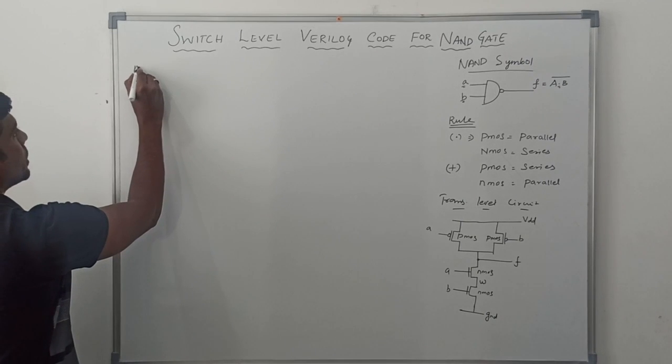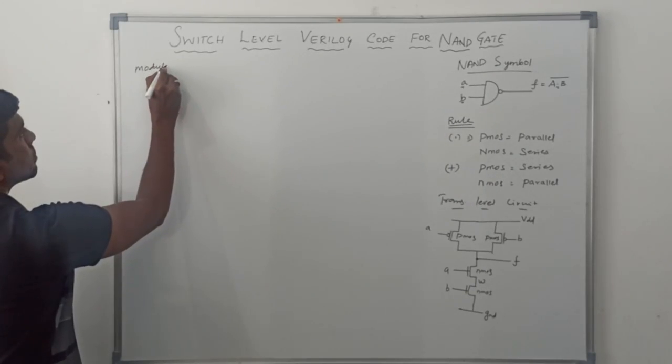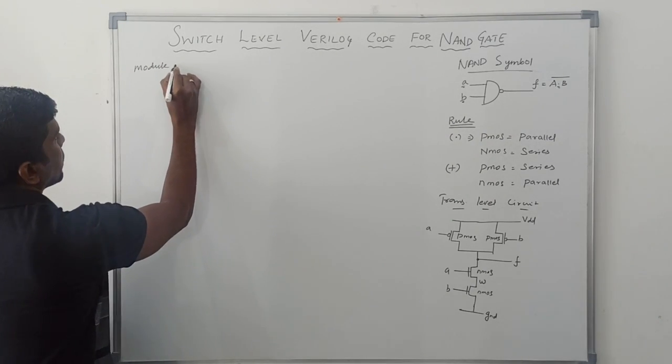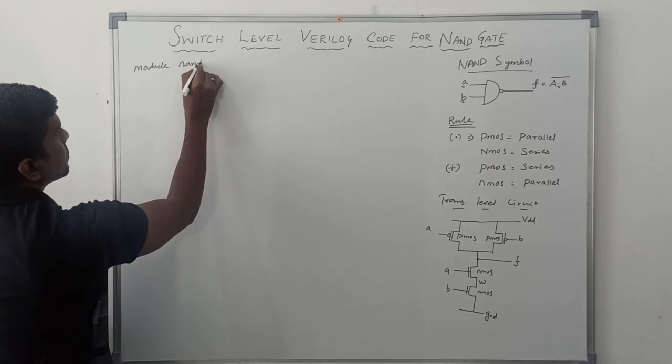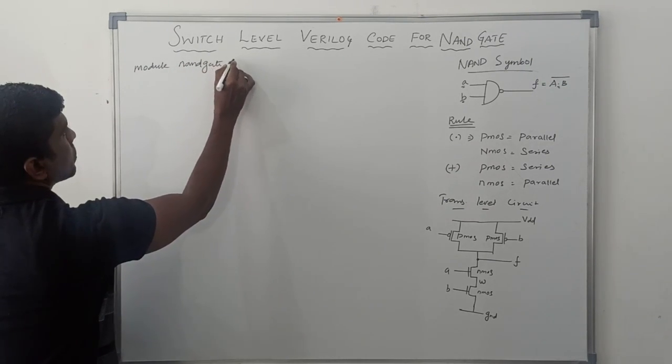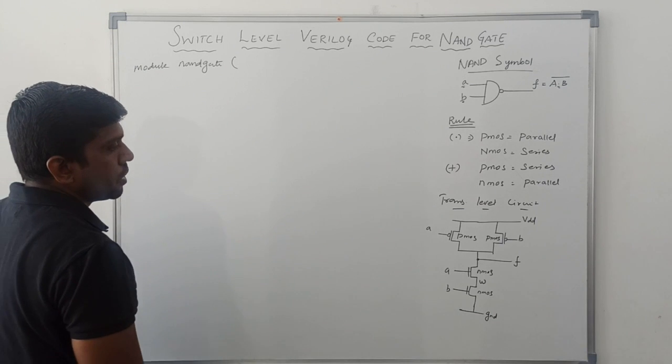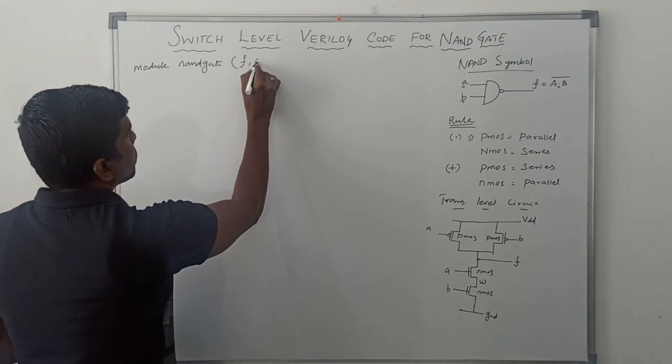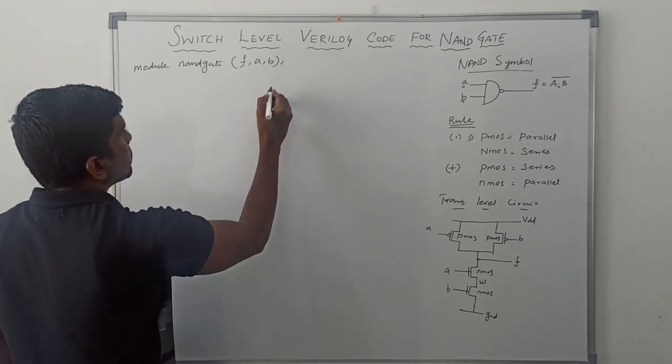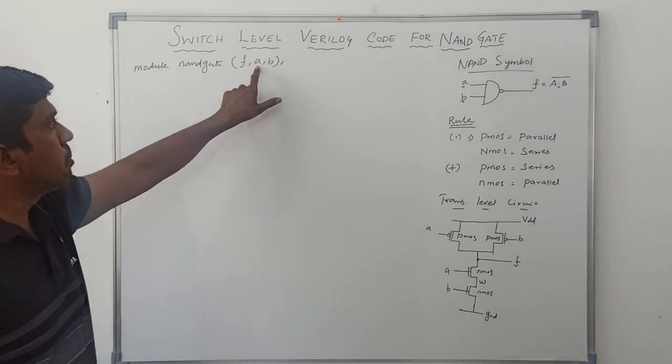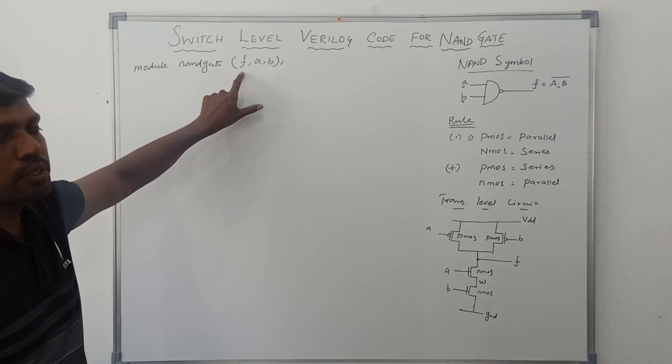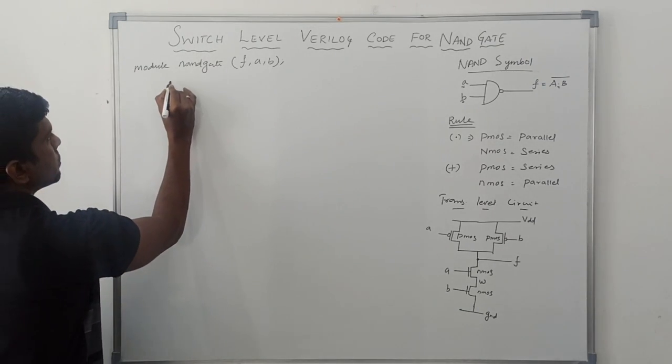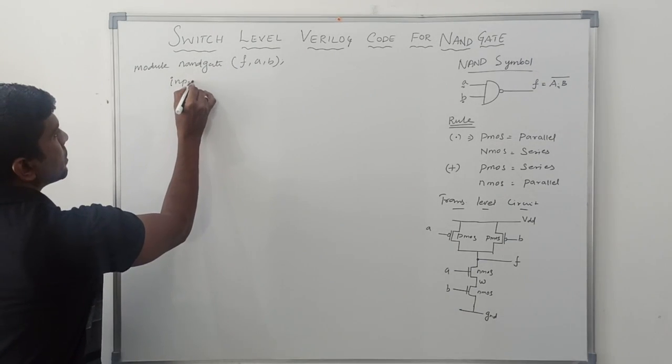First, write the module. Module name NAND unit. In this structure, we have three variables: F, A, B. Two variables are used as input variables. F is used for output variable. Now, I declare the input variables.